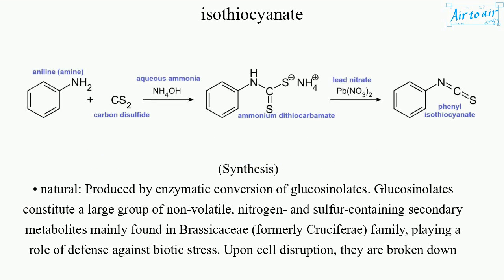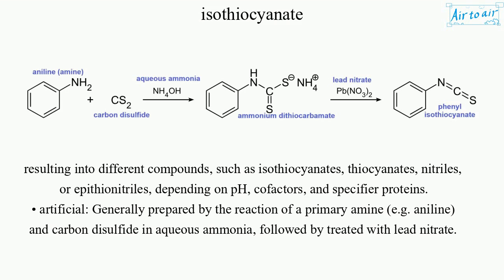Synthesis — natural: produced by enzymatic conversion of glucosinolates. Glucosinolates constitute a large group of non-volatile, nitrogen and sulfur containing secondary metabolites, mainly found in the Brassicaceae (formerly Cruciferae) family, playing a role of defense against biotic stress. Upon cell disruption, they are broken down resulting in different compounds, such as isothiocyanates.